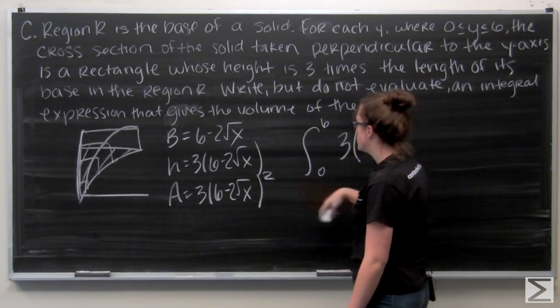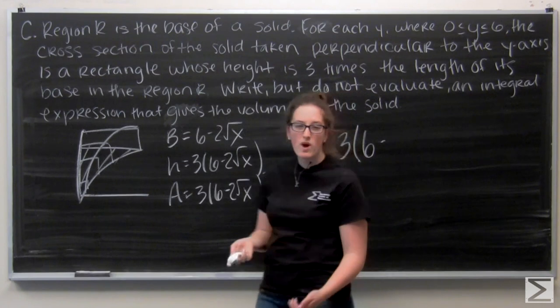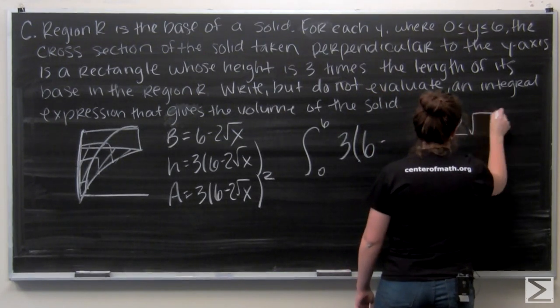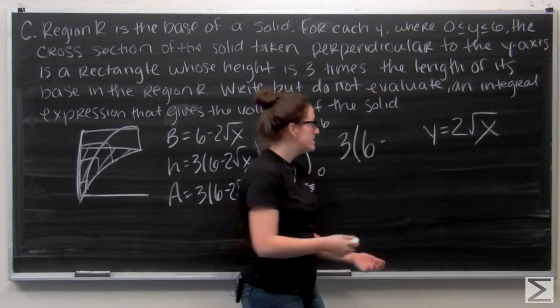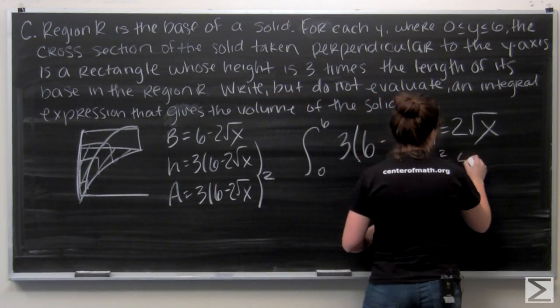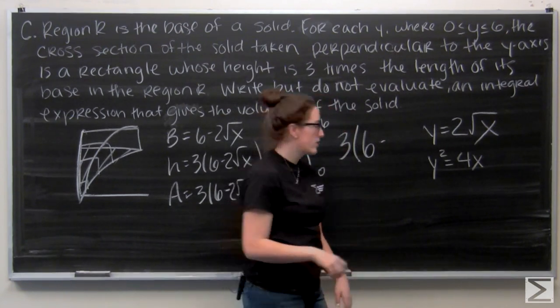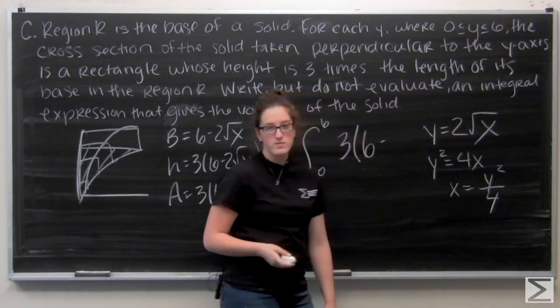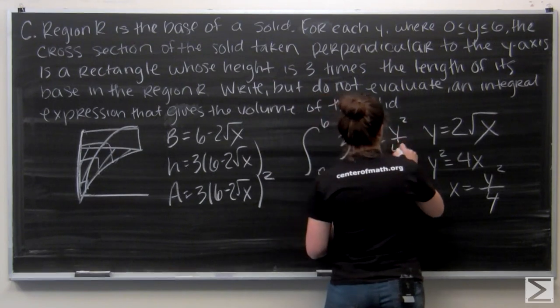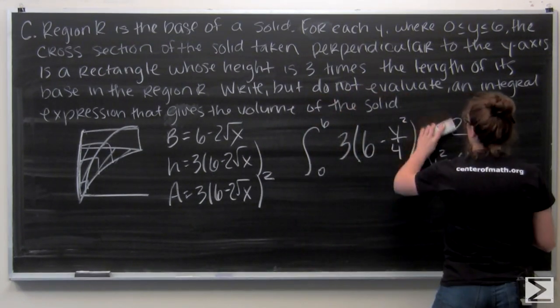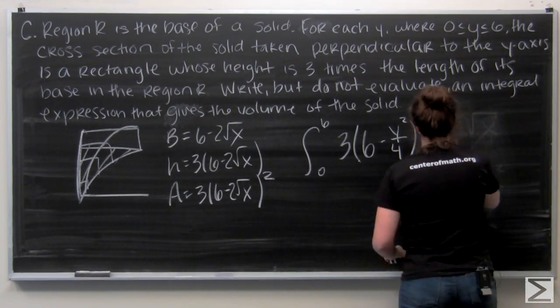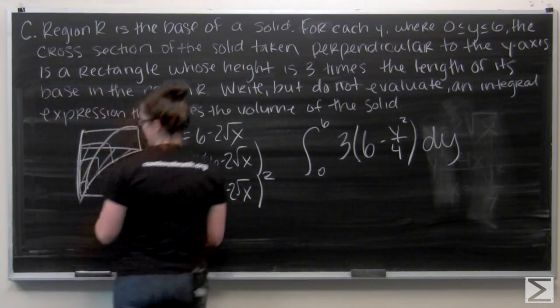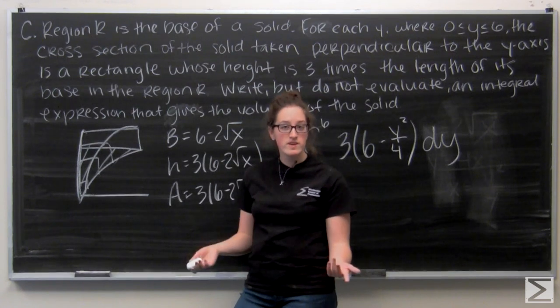I have three and six will stay the same. Let's think about Y equals two root X. I want to translate that so it's a function of Y instead. Let me go ahead and square both sides. And then divide by four. So my new function is one fourth Y squared. Let me go ahead and plug that in. And then add my DY. So this integral gives me the expression for the volume of this solid. Now I've answered all three parts of the question. But let me take a look at the scoring rubric and see how well I did.